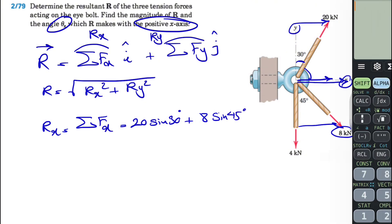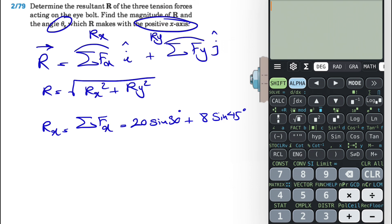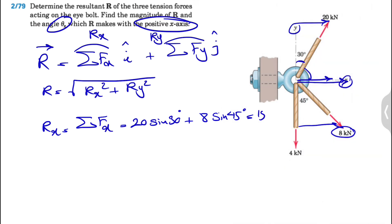Now let's calculate this. We have 20 sine of 30 degrees plus 8 sine of 45 degrees. Make sure to put the calculator in degree mode. That's going to give us, if you round it up, 15.66 kilonewton.